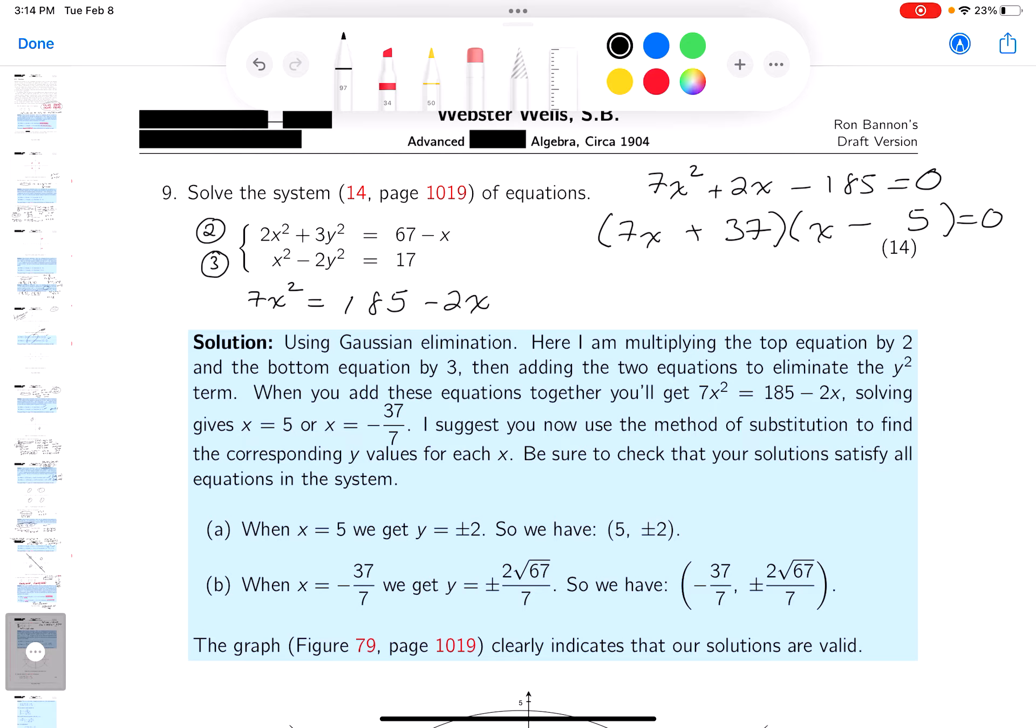Let me see if I get it. 7x times x is 7x squared. Minus 35 plus 37 is 2x. Gee, that worked beautifully. So I got an answer now. X equals 5 or x equals minus 37 sevenths.